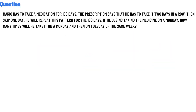Our today's question is: Mario has to take a medication for 180 days. The prescription says that he has to take it two days in a row, then skip one day. He will repeat these patterns for the 180 days. He began taking the medicines on a Monday. How many times will he take it on Monday and then on Tuesday of the same week?